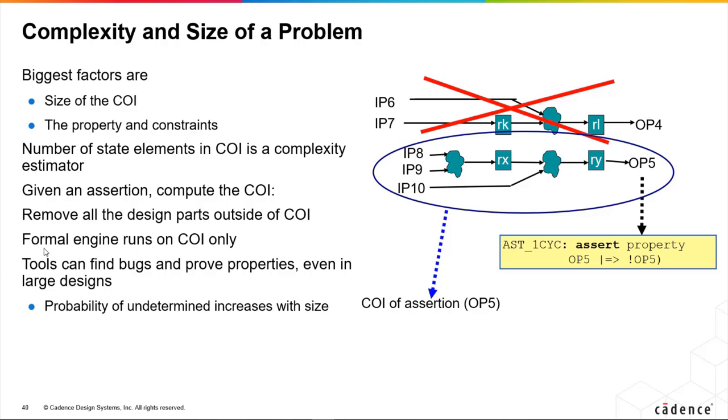Formal engines only run on the COI. An engine is just an algorithm - there are different kinds of engines which have different ways of proving it. Some are better than others at different kinds of designs, and you never know in advance.